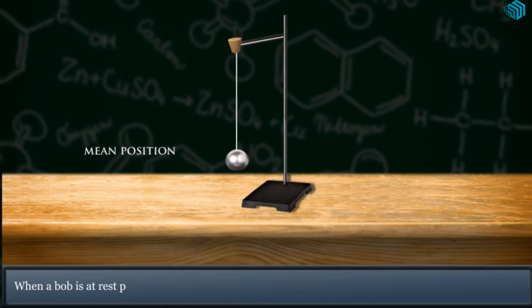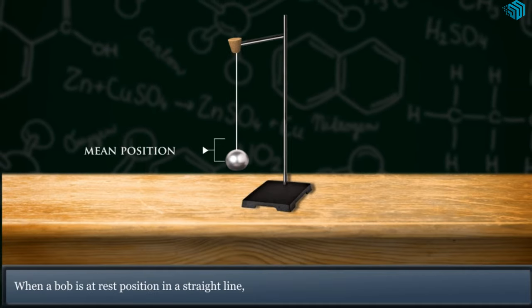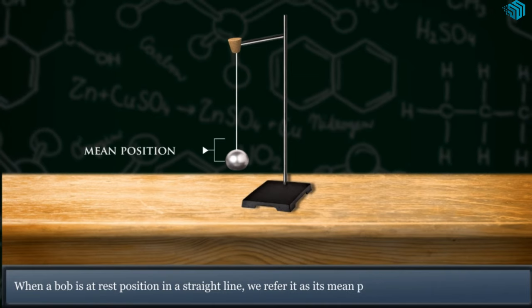When a bob is at rest position in a straight line, it is in its mean position.